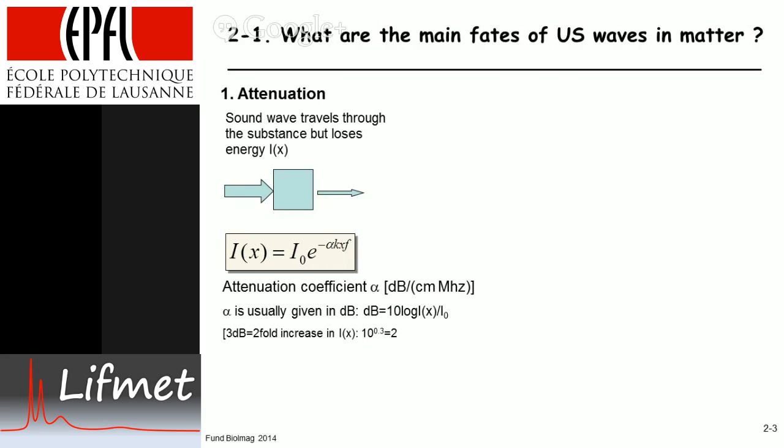We have a unit conversion factor K, which is the natural logarithm of 10 divided by 10, so that the equation works between the unit of decibel and this exponential law. Typically, what one has is about half a decibel per centimeter per megahertz.